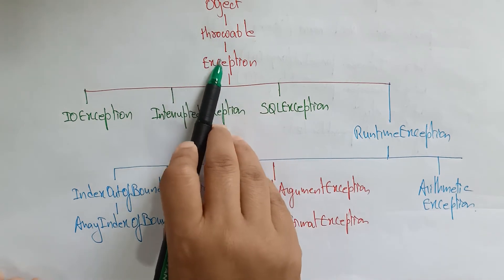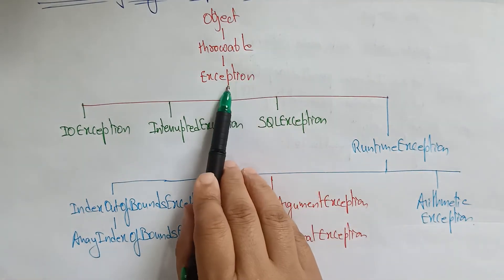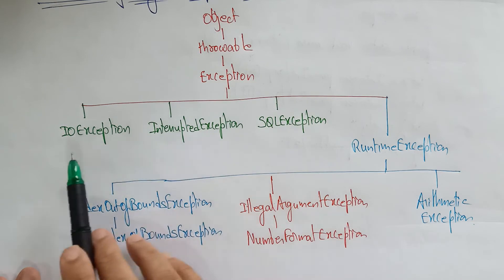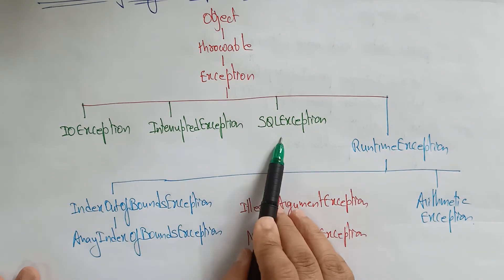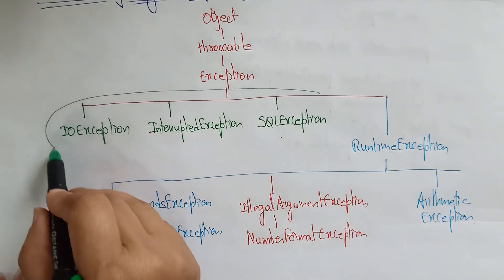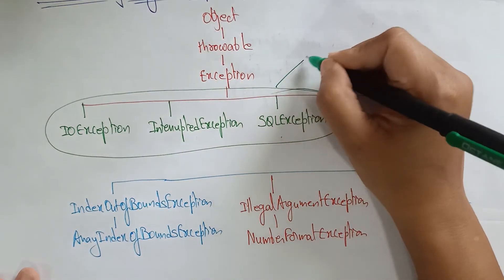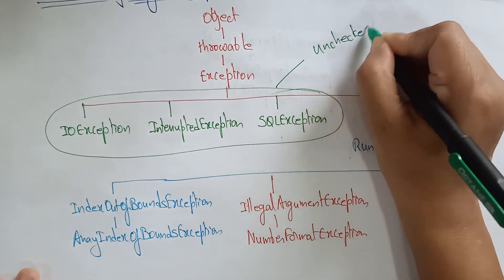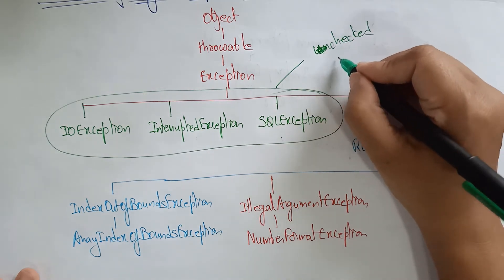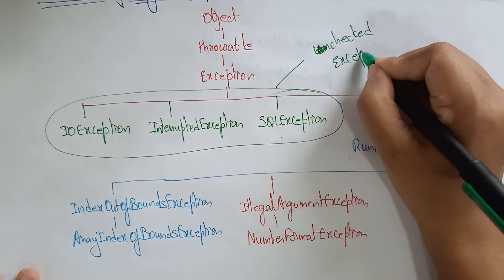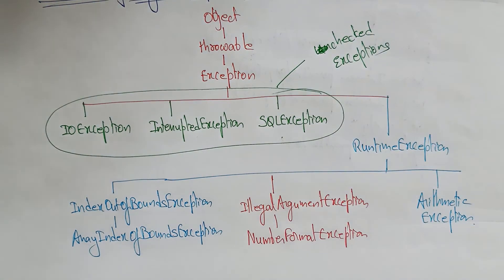Whatever object is created, if it is throwable, an exception is raised. So IOException, interrupted exception, SQL exception — these are all checked exceptions. I am sorry — these are all checked exceptions. The programmer has to explicitly write the code for this. IOException — the programmer has to write the handler. What type of IOException is occurring? What type of interrupted exception? What type of SQL exception?